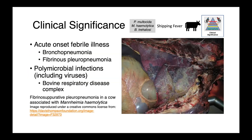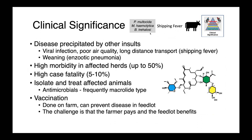Shipping fever is an acute onset febrile illness. It can be a bronchopneumonia or a fibrinous pleuropneumonia — you can see here these very congested, darkened, reddened lungs with fibrinous material on their serosal surface. Shipping fever is commonly a polymicrobial infection involving a variety of bacteria and viruses, together referred to as the bovine respiratory disease complex. It is precipitated by other insults, such as a prior viral infection, poor air quality, or long-distance transport — which is where the name shipping fever comes from.